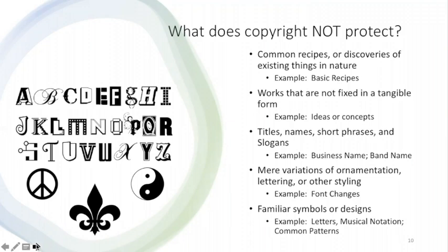There are several types of works commonly mistaken as being protectable when in fact they are not. Common examples include common recipes or discoveries of existing things in nature — think of an ingredient list and basic preparation instructions, or the discovery of a plant growing in a rainforest. Works that are not fixed in a tangible form also cannot be protected by copyright. Ideas or concepts are not protectable. So if I have a tune in my head that I have hummed out loud, it cannot be protected by copyright until I record it on my phone or write the composition down on paper.